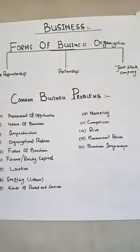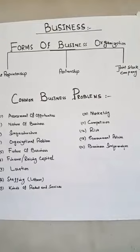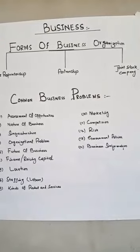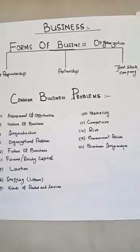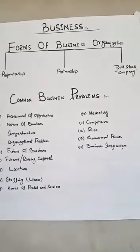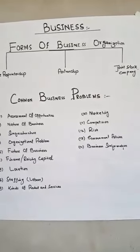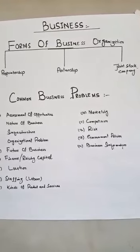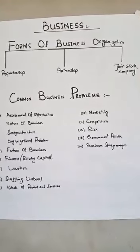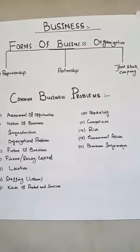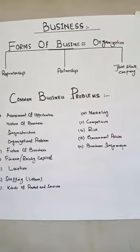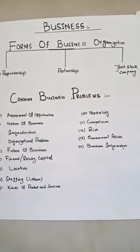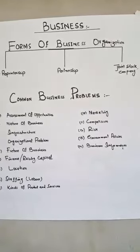Number thirteen is government policies. Government policies either encourage or discourage new businessmen. The government changes its policies depending upon the economic conditions of the country.